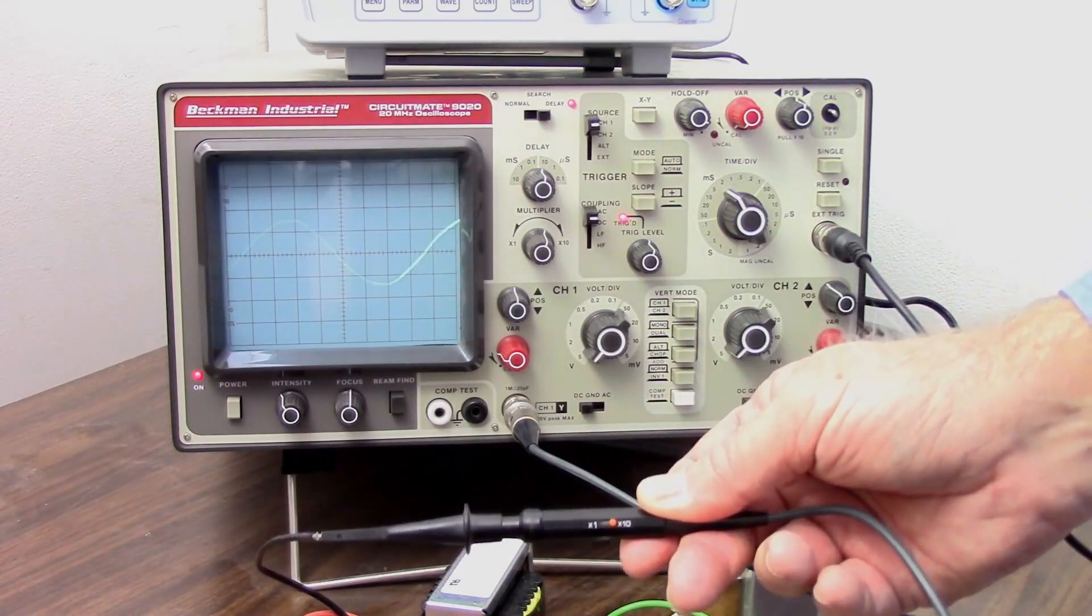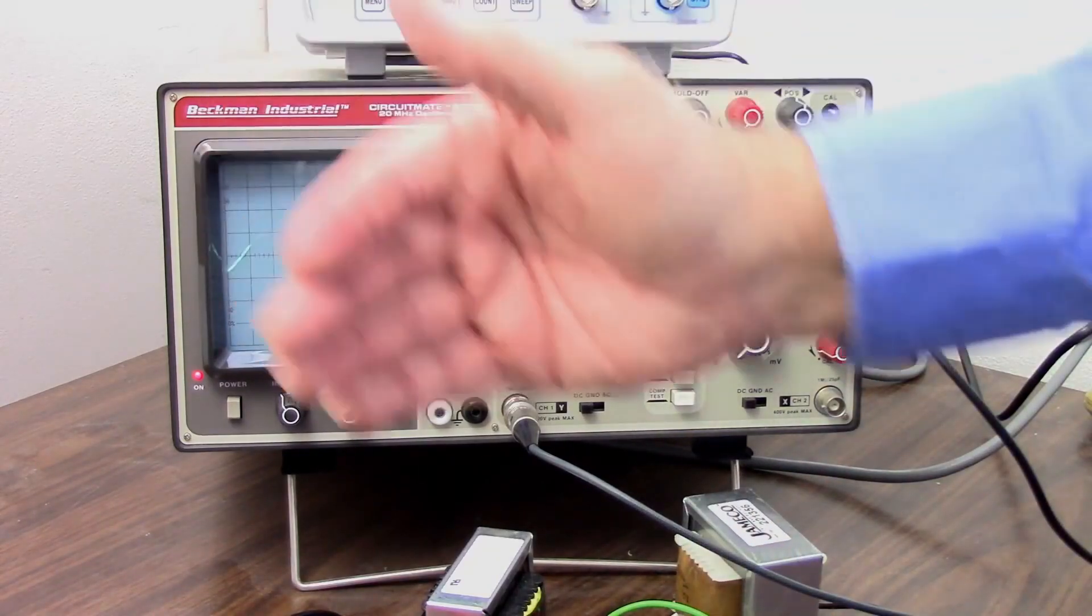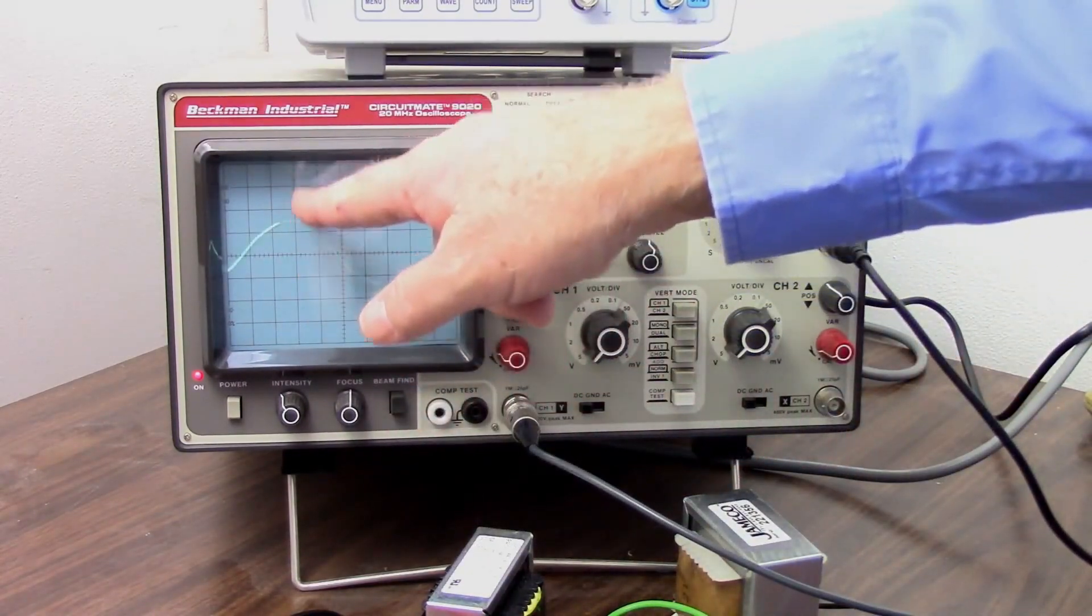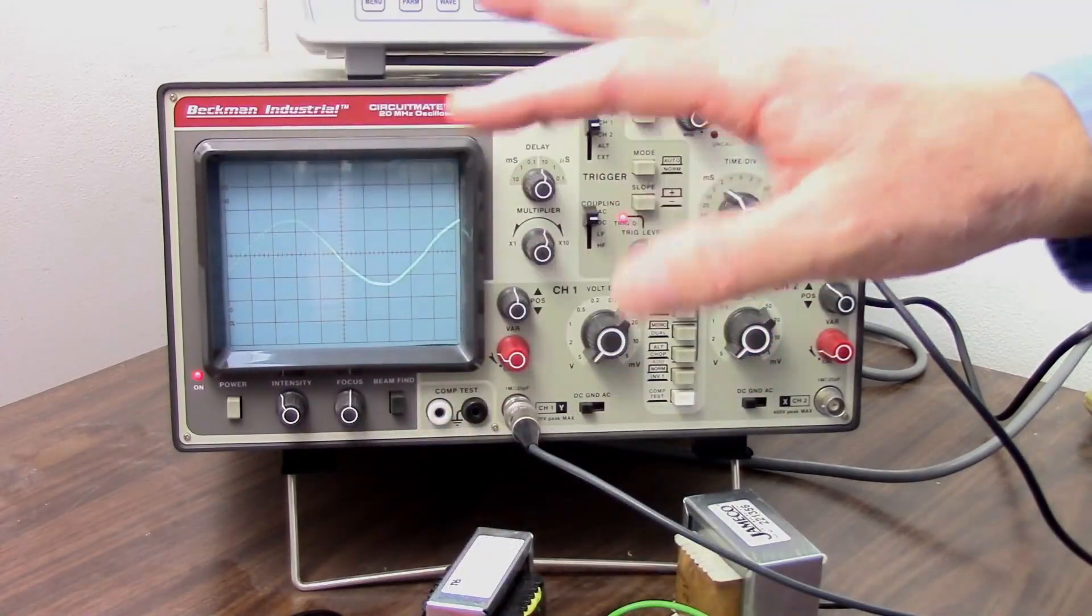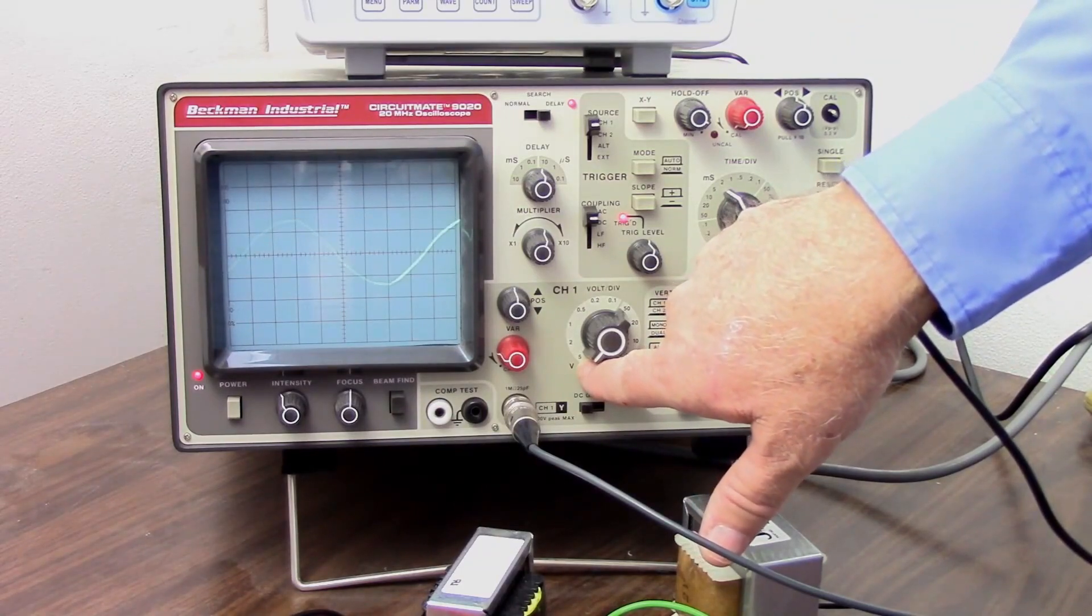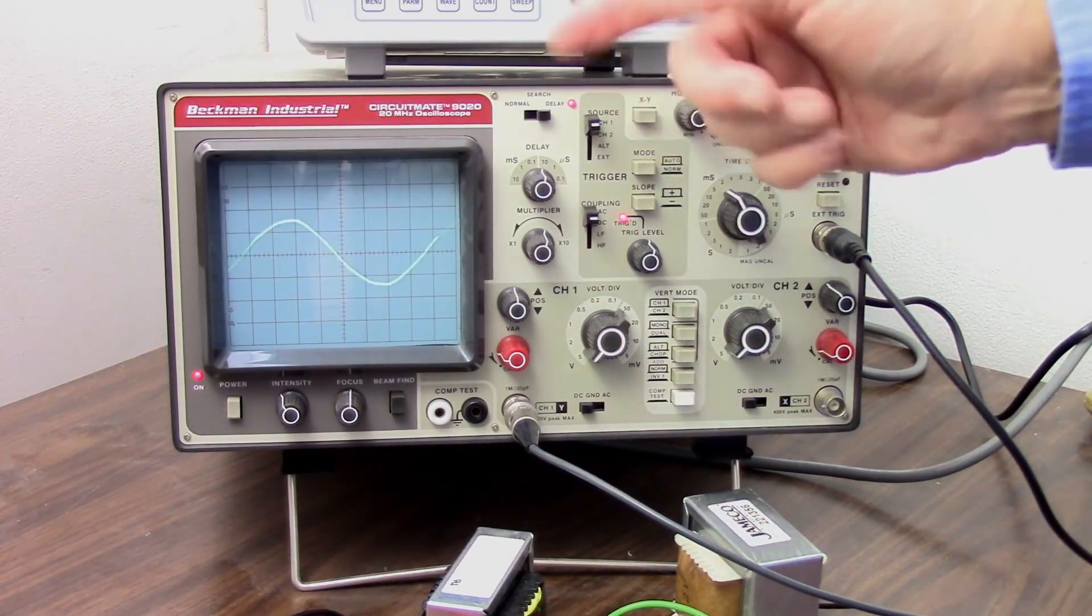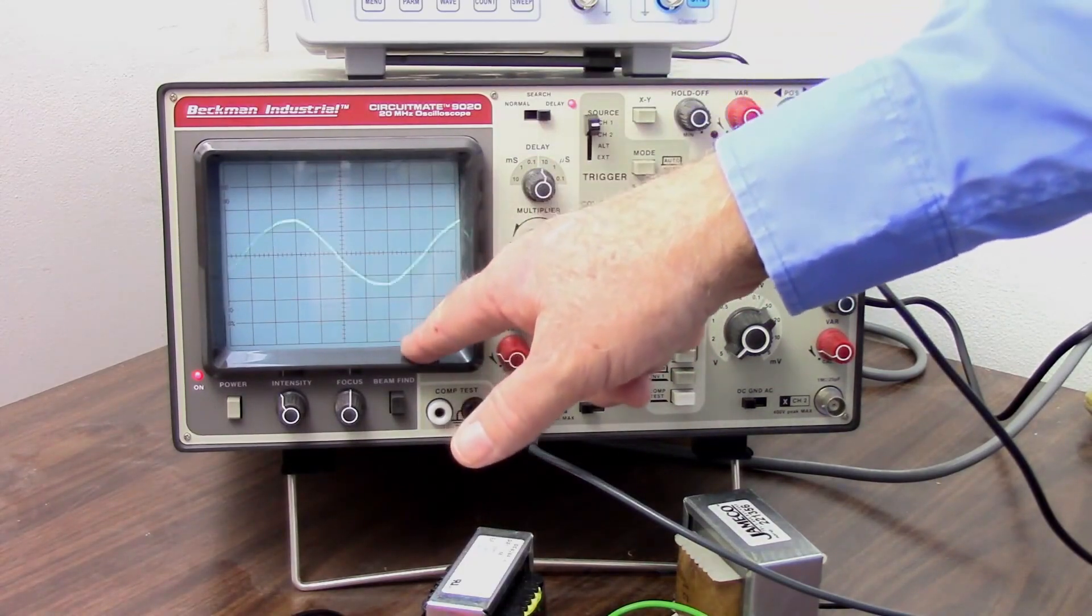So look what happened. So what the times ten probe did is it reduced the input level so that I get a smaller display on the screen. It's reducing the voltage by ten. So what I need to do is remember to multiply this number by ten. So I have five volts per division. Now it's 50 volts per division. So instead of being 40 volts from the bottom to the top, now it's 400 volts from the bottom to the top.